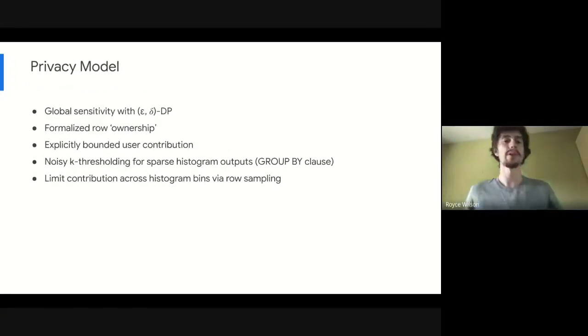Looking a little closer at the privacy model that we're introducing, as I was talking about, we're using epsilon delta differential privacy and specifically we're using global sensitivity in the context of the aggregation functions. We have this formalized notion of row ownership or row attribution. So each row or each record in each table is owned by exactly one user. A user can own multiple rows. And this row ownership needs to be consistent across multiple tables to correctly support joins. And then we have our explicit model of contribution bounds. We bound contribution within individual rows. We bound contribution across histogram bins. And then finally, we do noisy thresholding to protect sparse histogram outputs. And this last thing, the noisy thresholding, is where the delta component of the epsilon delta differential privacy comes into play.